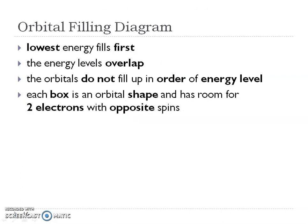The orbital filling diagram tells us to start with the lowest energy first. We'll later talk about how energy levels overlap, called hybridization. Remember that not all orbitals fill up in order of energy level — sub-levels D and F are slightly different. They fill up in order of energy, not energy level number. Each orbital shape — each box — has room for two electrons with opposite spins.